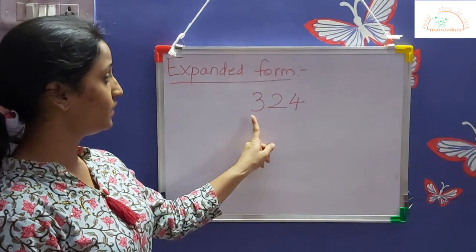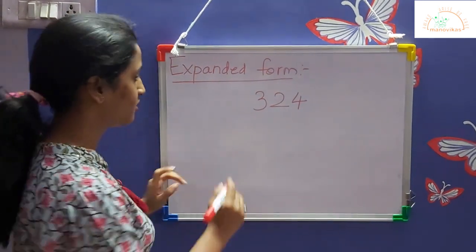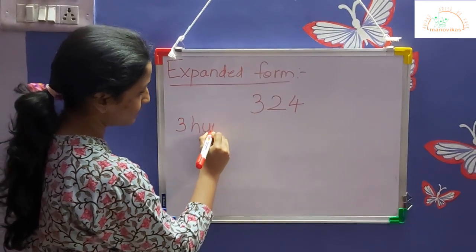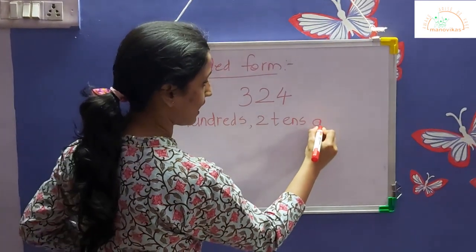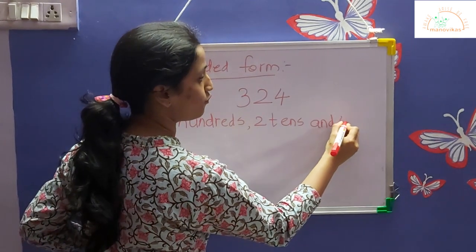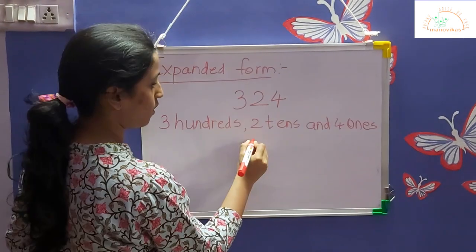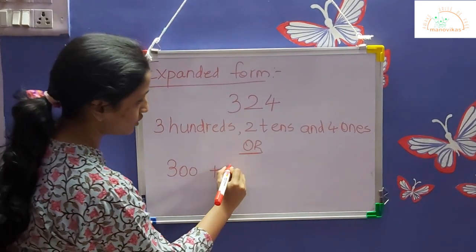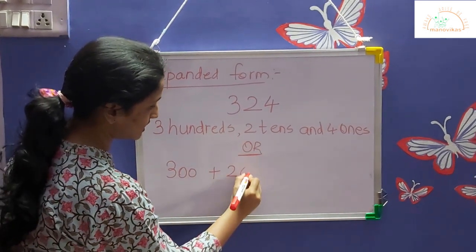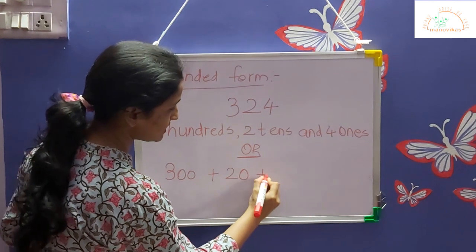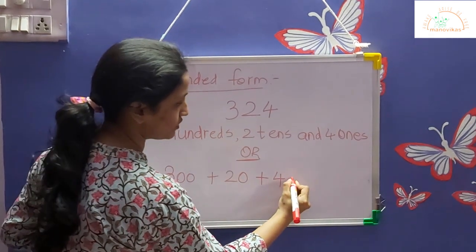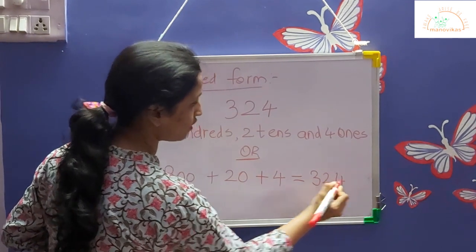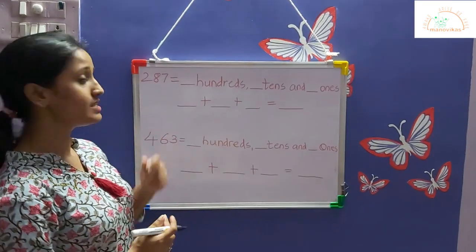Now we will solve one more example — three hundred and twenty-four. We write it as 3 hundreds, 2 tens, and 4 ones, or 300 plus 20 plus 4, which is equal to 324.